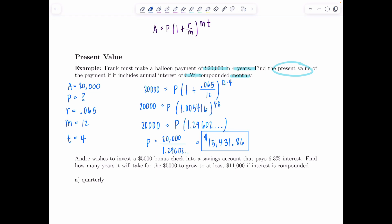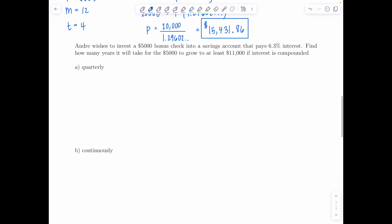Next example Andre wishes to invest a five thousand dollar bonus check into a savings account that pays 6.3 percent interest. Find how many years it will take for the five thousand dollars to grow to at least eleven thousand dollars if interest is compounded first quarterly and then continuously. Let's see how long Andre's going to have to leave that 5k in there to make it more than double. So for the first one we're compounding quarterly so we're going to use our compound interest formula.